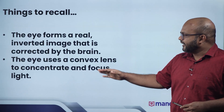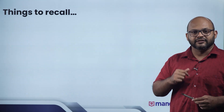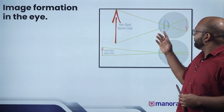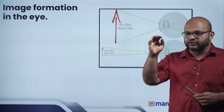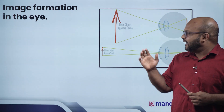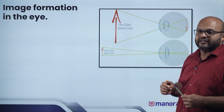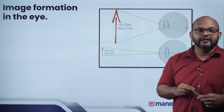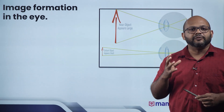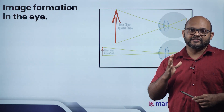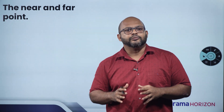The eye uses a convex lens to concentrate and focus light. The convex lens is rounded on two sides. Because it is a rounded lens, we have an inverted, magnified, real image. The eye's lens has a near-point and a far-point.